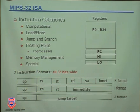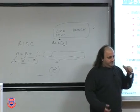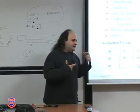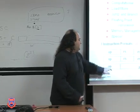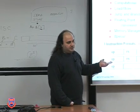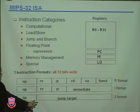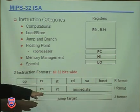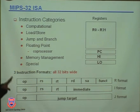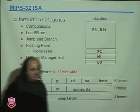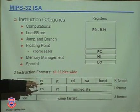Our last instruction type is J-format — jump instructions. In order to implement if-then-else clauses, I need a command like 'goto': go to this line of the program. So a jump instruction only needs an operation code and a jump target. R-format, I-format, and J-format are the instruction formats we will use in the MIPS architecture. And every instruction, as you can notice, is the same size — 32 bits.